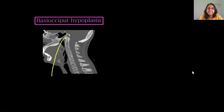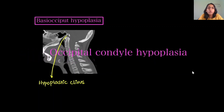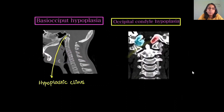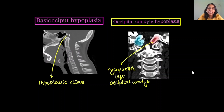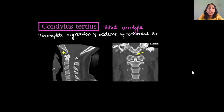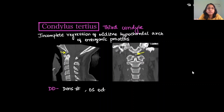Basiocciput hypoplasia involves a hypoplastic clivus or basi-occiput. Occipital condyle hypoplasia involves a hypoplastic occipital condyle, either unilateral or bilateral — the hypoplastic left occipital condyle is shown in red. Condylus tertius, or the third condyle, is a small corticated bony fragment due to incomplete regression of the midline hypocaudal arches of the embryonic pro-atlas. Differential diagnosis includes dens fracture, os odontoideum, os terminale, and calcification of the dens ligament.